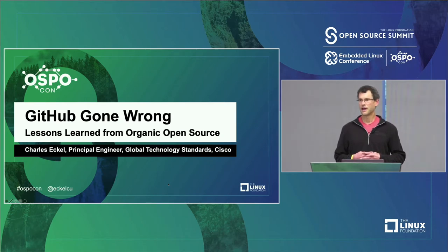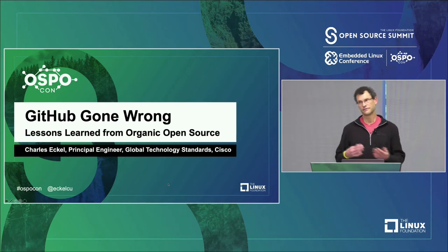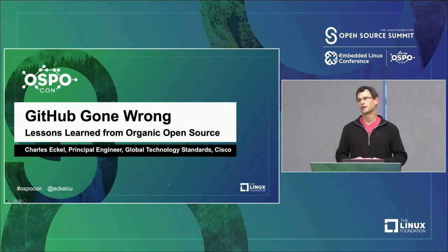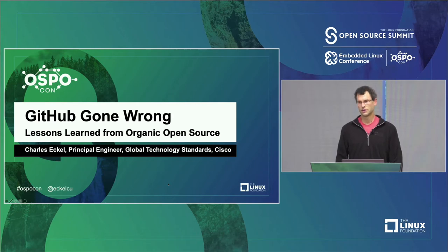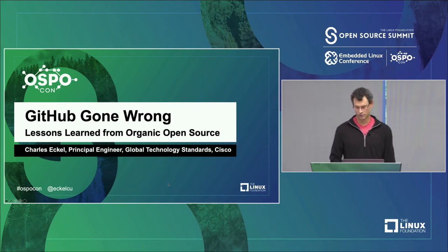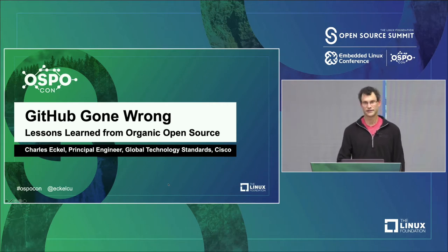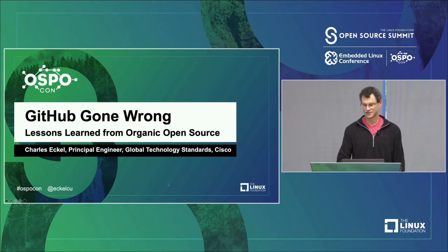This talk is a little bit about how GitHub really empowered and enabled this community of sometimes different siloed groups — not siloed intentionally, they just had different things they were working on — and ways about going and open sourcing things. Using GitHub as a great tool for sharing code, the way that happened organically within Cisco, and some lessons that I learned and that others learned from that, and some improvements we've made.